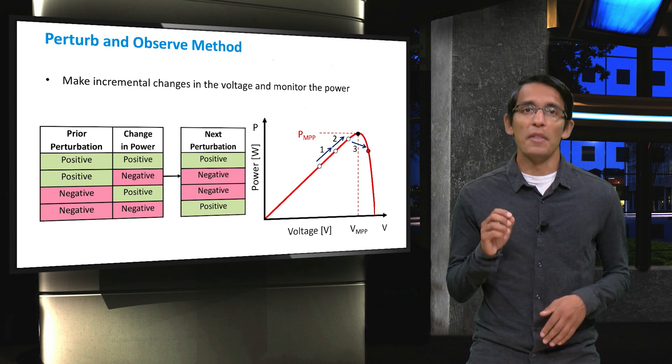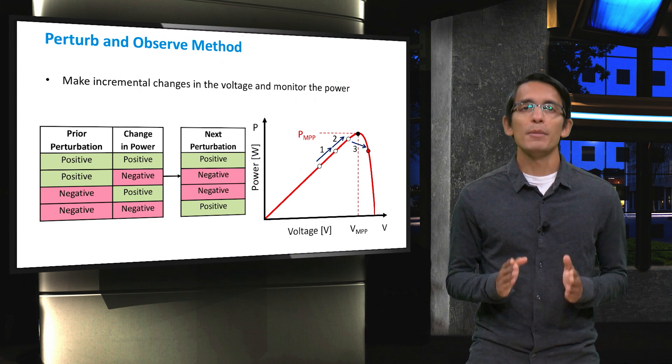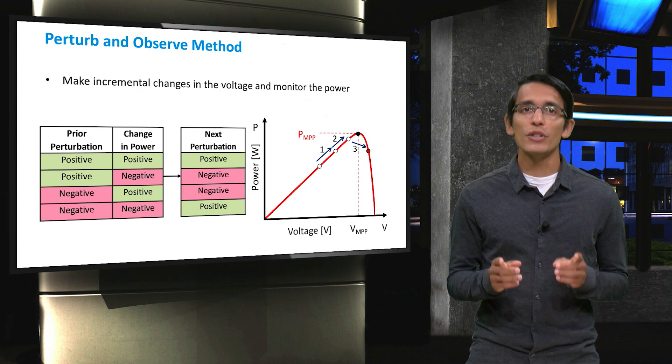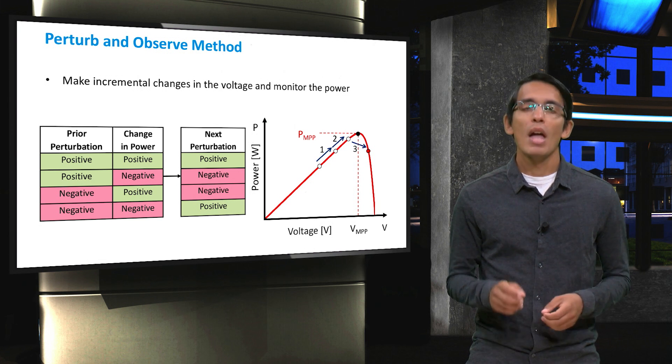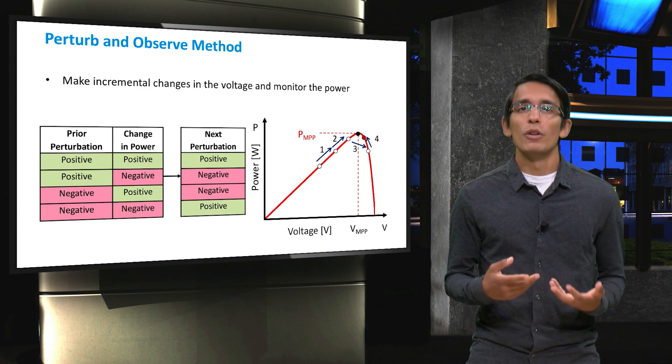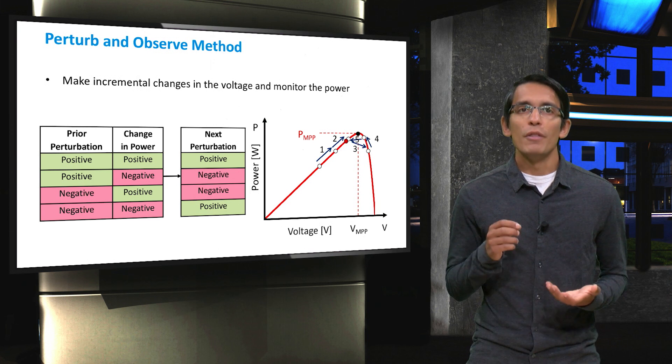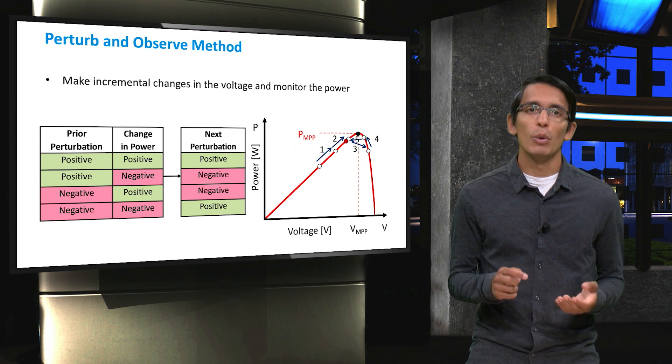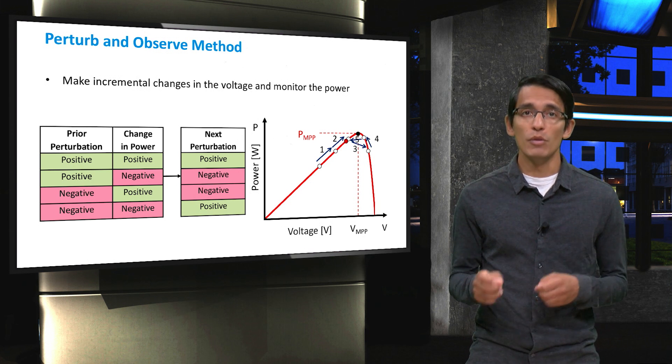Now you see that the increase in voltage has resulted in a decrease in power. This means we will reverse our voltage perturbations and decrease our voltage. A slight increase in power is observed, so we will further decrease the voltage. Now you see that after this perturbation, we end up with a decrease in power, so we will reverse directions again and increase our voltage in the next move.